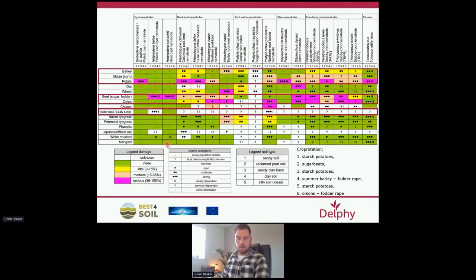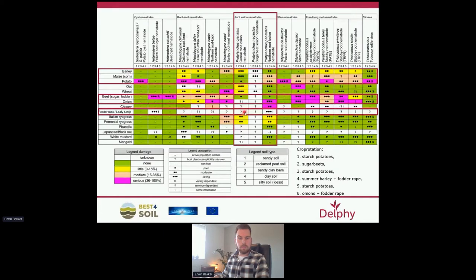This scheme shows the selected crops in the rotation — barley, potato, sugar beet, onion, and fodder rape — along with the nematodes for which higher numbers were found: Pratylenchus crenatus, neglectus, and penetrans. Pratylenchus crenatus does not cause much damage in these crops — there is no orange or purple color. We don't know much about the effect of neglectus, as indicated by the white color. Pratylenchus penetrans causes a lot of damage: orange in potatoes and purple in onions.